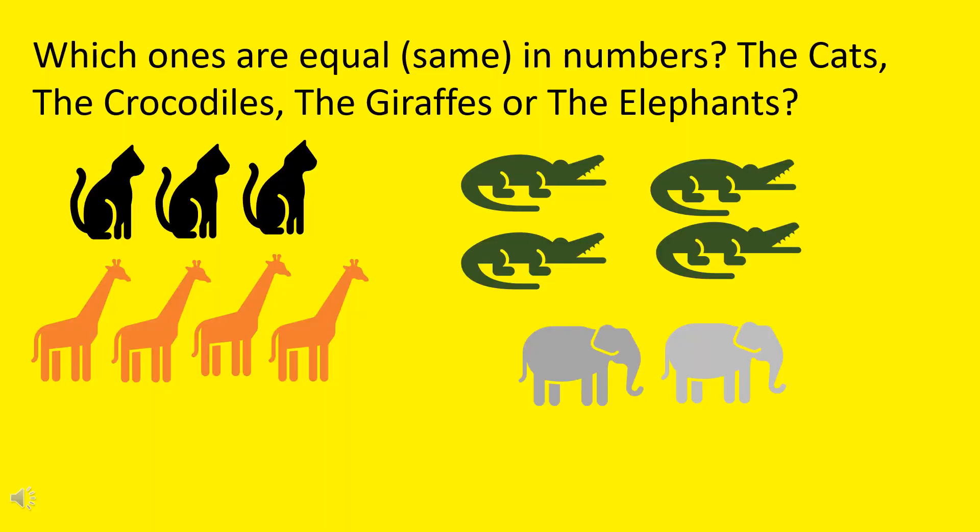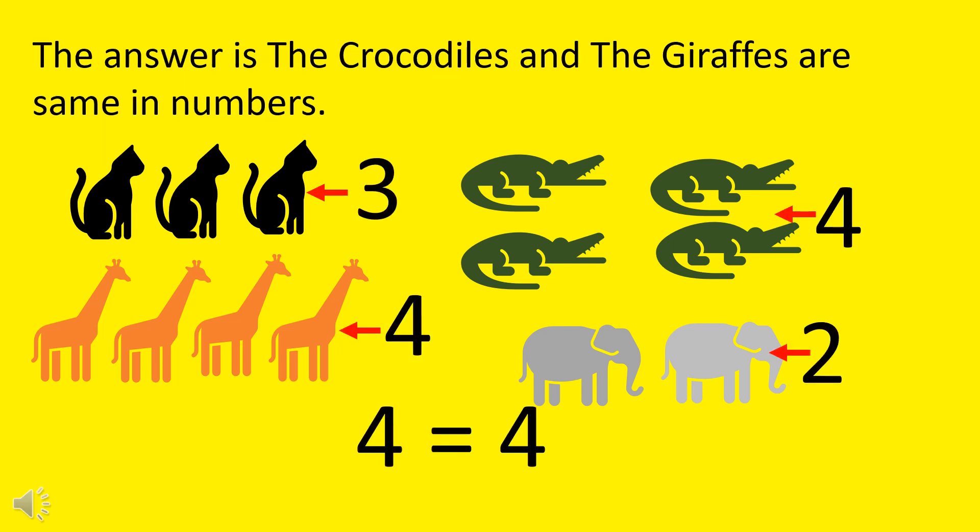Now answer this: which ones are equal, same, in numbers — the cats, the crocodiles, the giraffes, or the elephants? The answer is the crocodiles and the giraffes are the same in numbers, because the giraffes are four and the crocodiles are four, and four is equal to four.